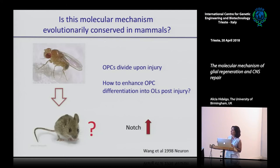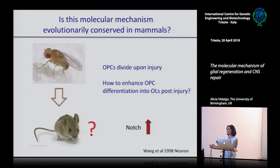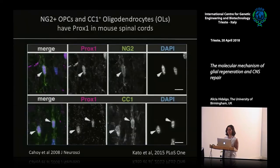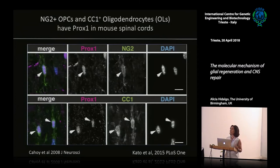What we knew from literature was that upon injury there was an upregulation of Notch in OPCs, similar to what we were seeing in the fly. So there is an upregulation of Notch in OPCs upon injury - what about the Prospero homolog? Where is PROX1? And what we found, intriguingly, is that PROX1 is in NG2 cells and at much higher levels in oligodendrocytes.